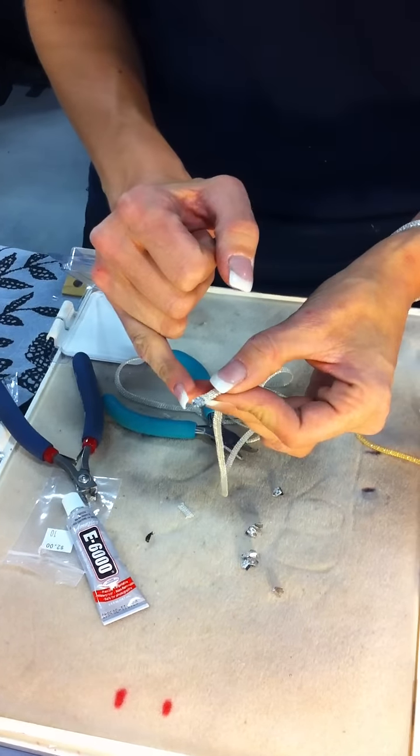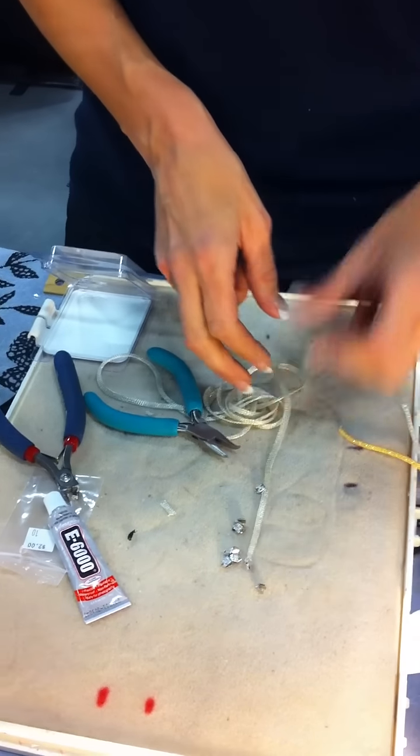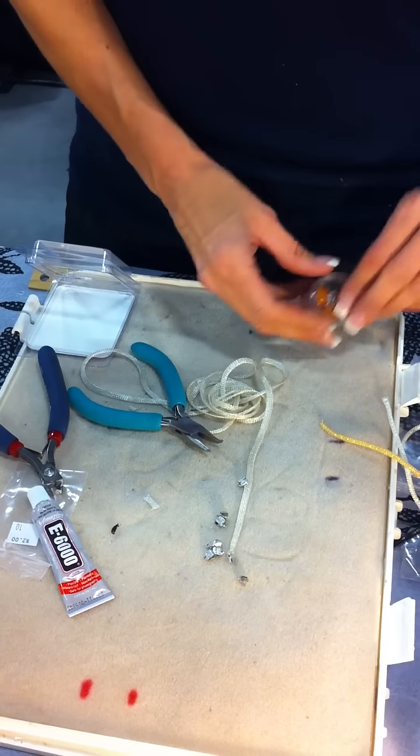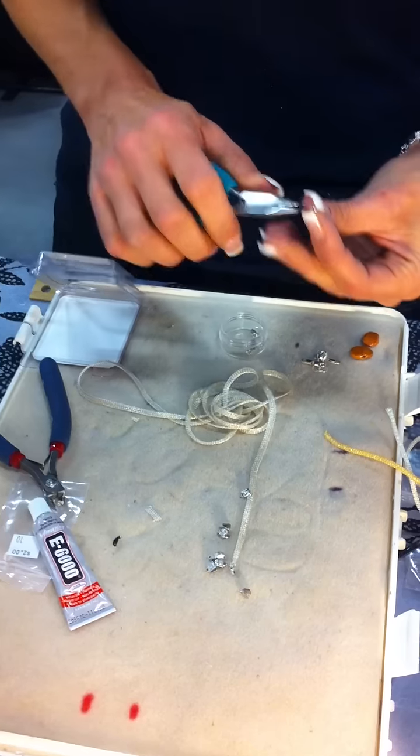And that's how we do that. So now what I'm going to do is use my pliers and I've got a couple of open jump rings around here.